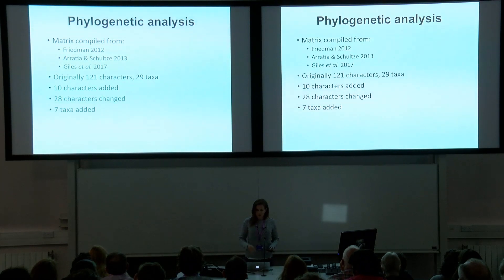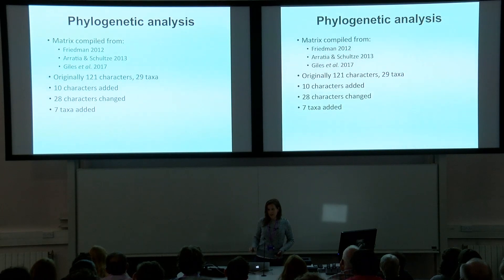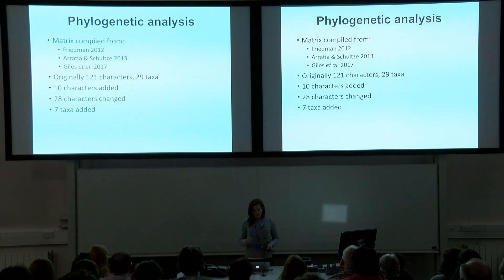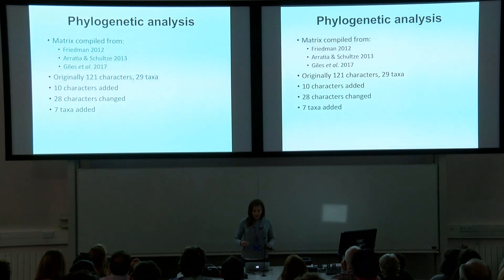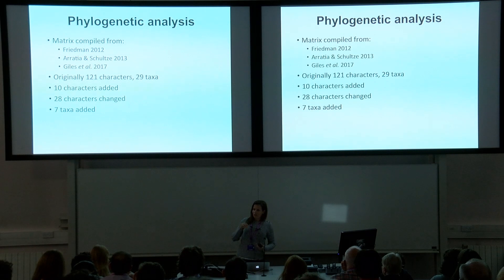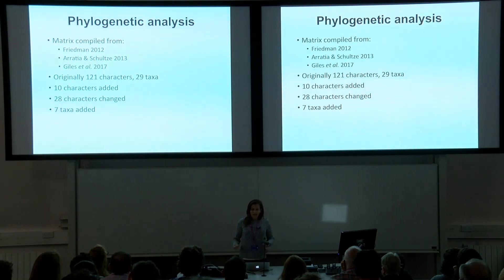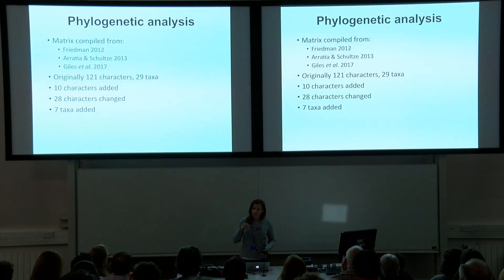In Friedman 2012's matrix there are 121 characters and 29 taxa. I added 10 completely new characters, mainly around gill raker morphology. I changed individual characters in 28 instances, reviewing the whole matrix to make sure it was correct. I updated the Pachycomus coding with our new description, then added 7 taxa: I atomized Orthochormus into its three recognized species and also included Aspidorhynchids, as they are generally considered to be the sister taxa to pachycomiforms.